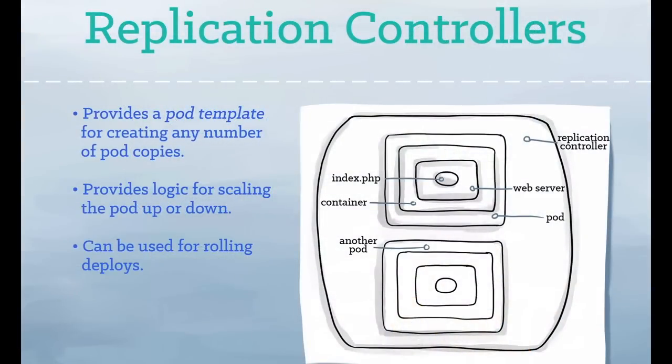Replication controllers provide a method for managing an arbitrary number of pods. A replication controller contains a pod template, which can be replicated any number of times. Through the replication controller, Kubernetes will manage your pod's lifecycle, including scaling up and down, rolling deployments, and monitoring.